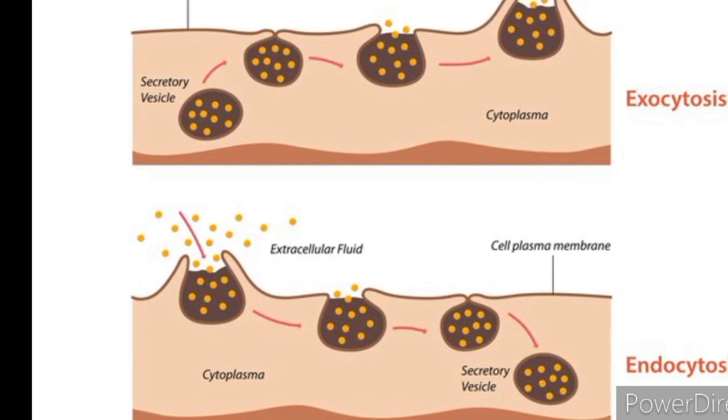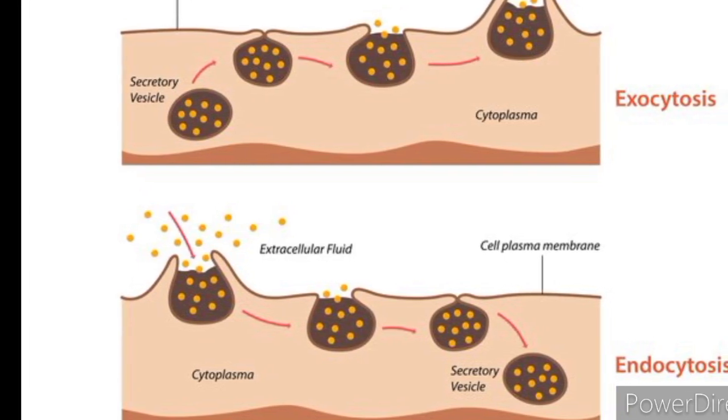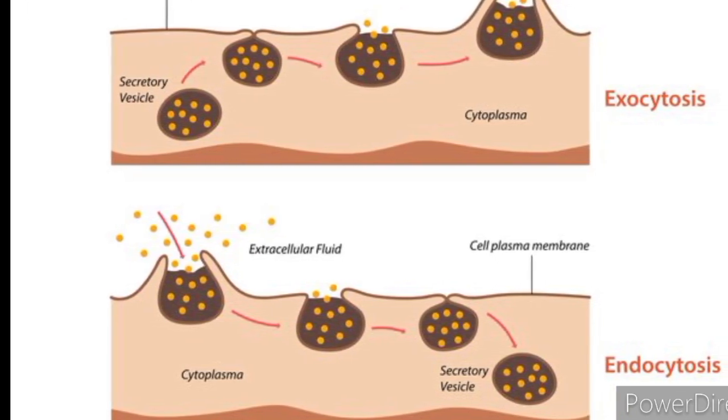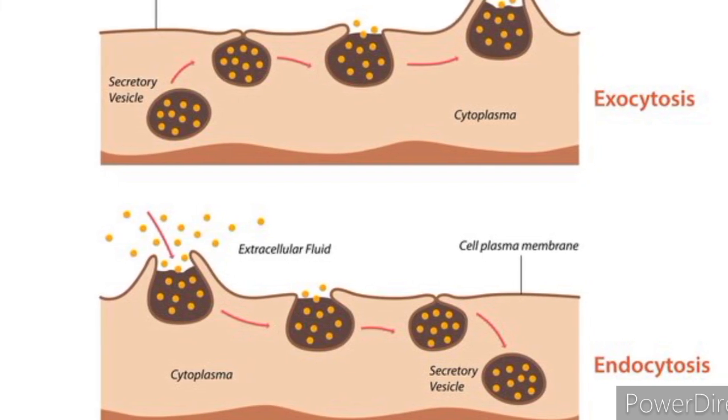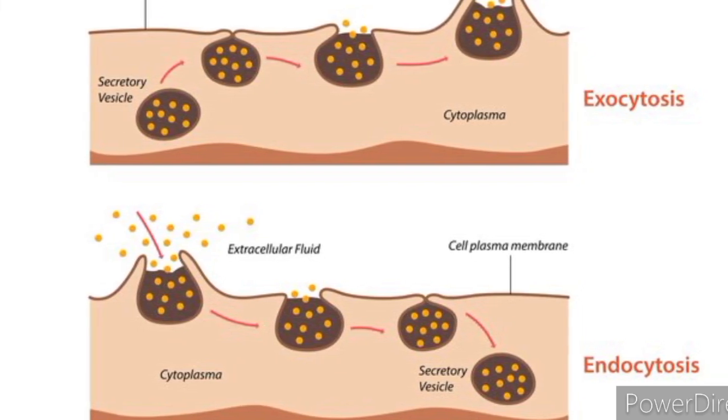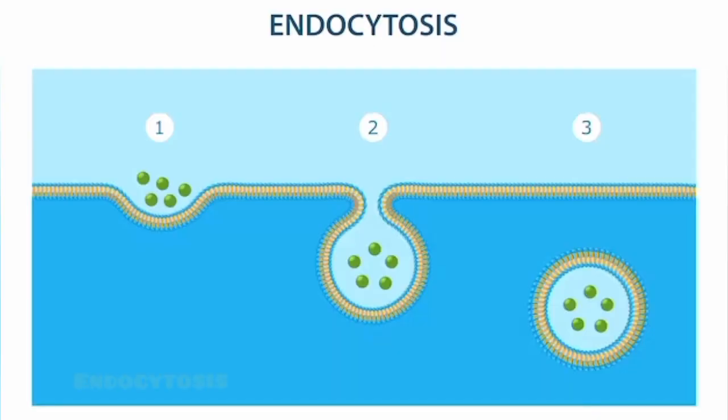Endocytosis and exocytosis: These processes involve the membrane forming vesicles to transport large molecules or particles. Endocytosis: the cell engulfs substances by forming vesicles from the plasma membrane. Types include phagocytosis (engulfing solid particles) and pinocytosis (engulfing liquids).